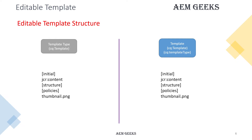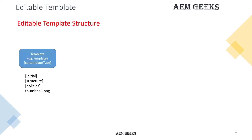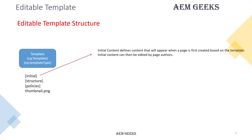The structure of a template type and a template is exactly the same: they both have an initial JCR content structure, policies, and a thumbnail — we'll cover these in detail with a demo. In the template there is an additional property called 'template type' which refers to the template type it was created from.